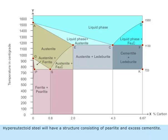Hypereutectoid steel will have a structure consisting of pearlite and excess cementite.